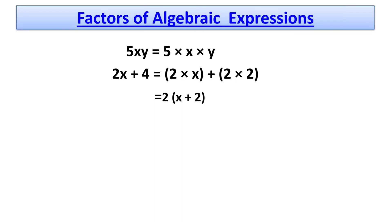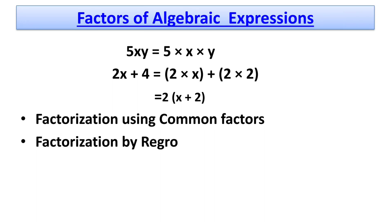There are many methods of finding factors of algebraic expressions. But the most common methods are factorization using common factors, factorization by regrouping terms, and factorization using identities.